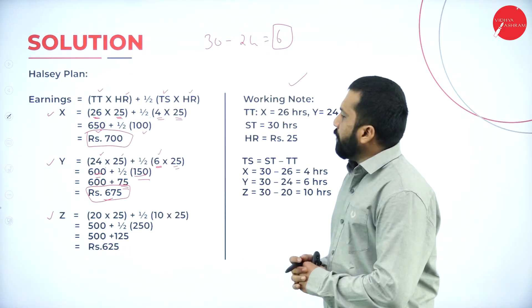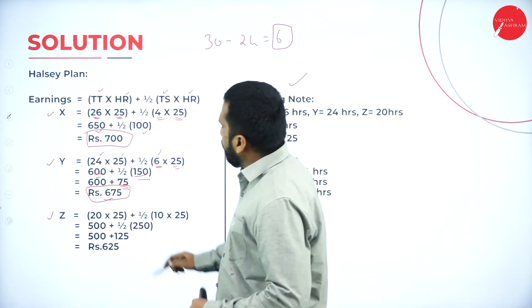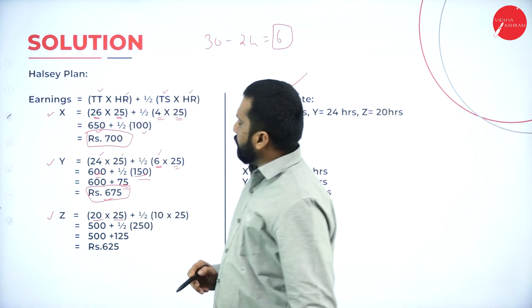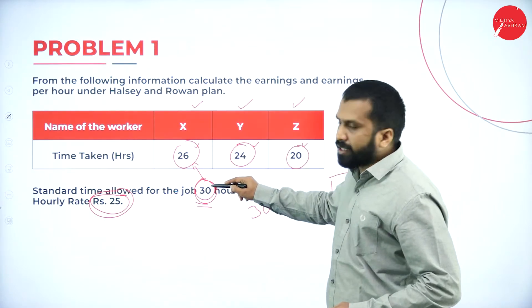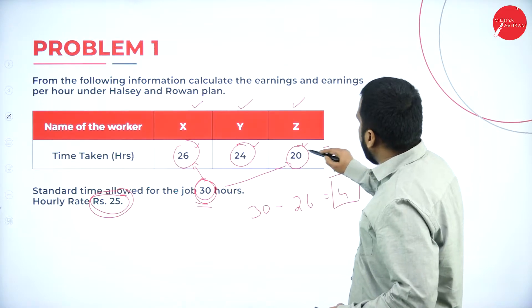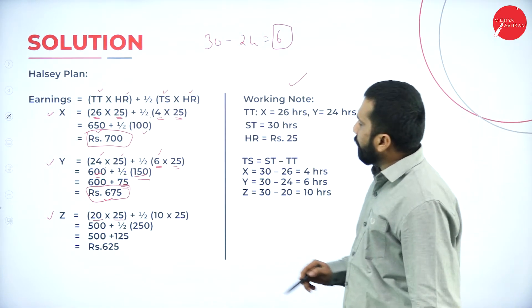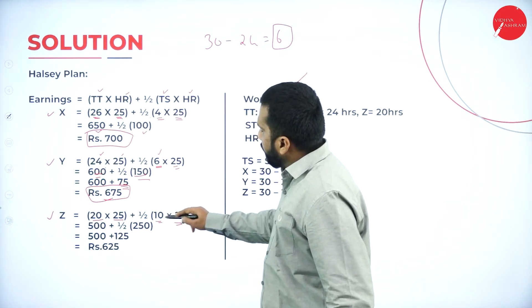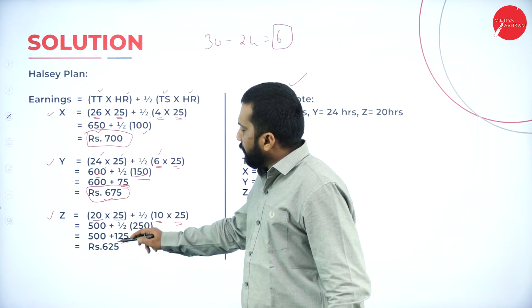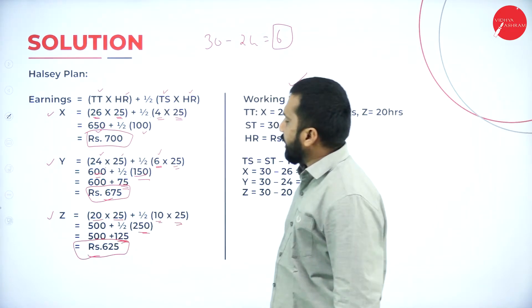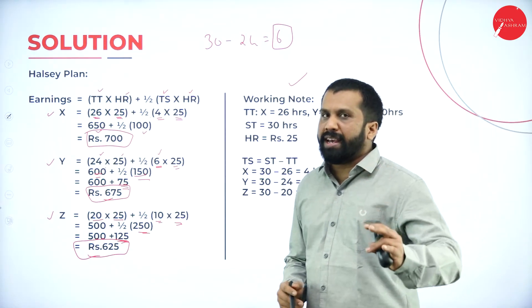For Z — Z took just 20 hours. Standard time is 30. So 30 minus 20 = 10 hours saved. 20 × 25 = 500. 10 × 25 = 250; half of 250 is 125. Therefore, 500 + 125 = 625. We are done with X, Y, and Z under the Halsey Plan.